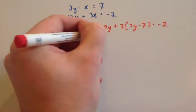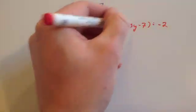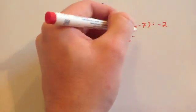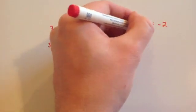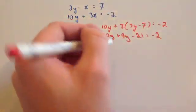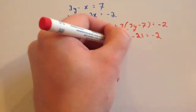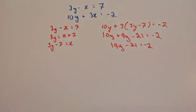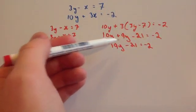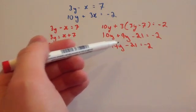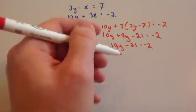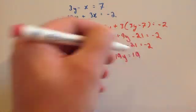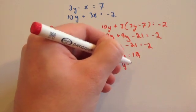Expanding the bracket: 3 times 3y is 9y, and 3 times minus 7 is minus 21. So we get 10y plus 9y minus 21 equals minus 2. Adding the y terms gives 19y minus 21 equals minus 2. Adding 21 to both sides gives 19y equals 19, and dividing gives y equals 1.